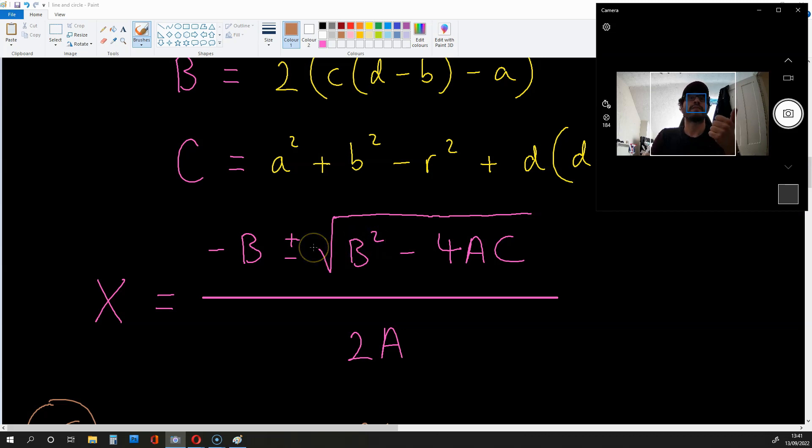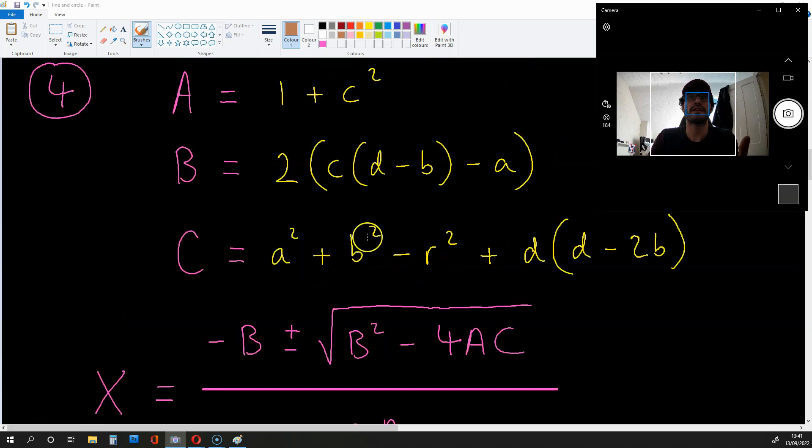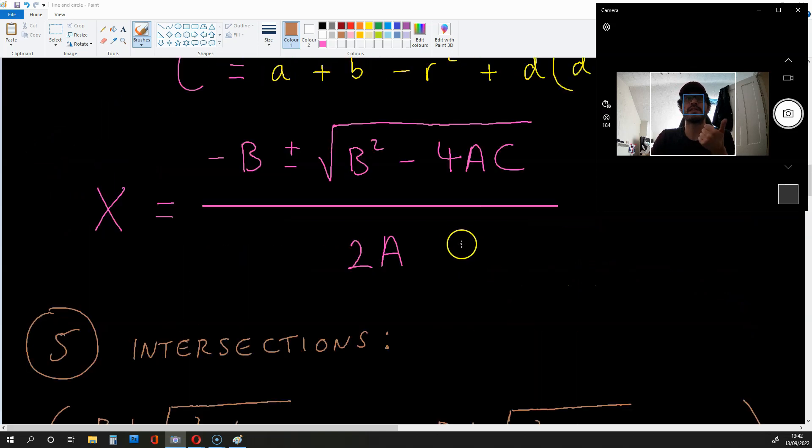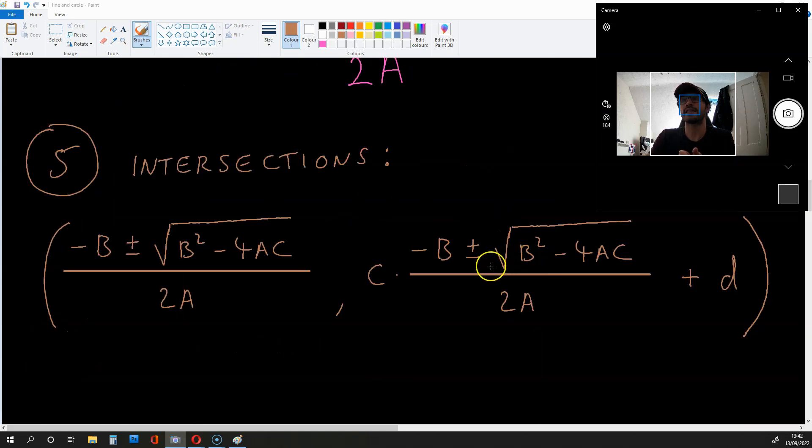Now, from here, to get the y coordinates for the intersections, we simply plug this expression over here, after we've replaced A, B, and C with these expressions, into cx + d. That's the equation of the line. So what we're going to do is get x and plug it into cx + d. So we end up with this as the y coordinates for the intersections.